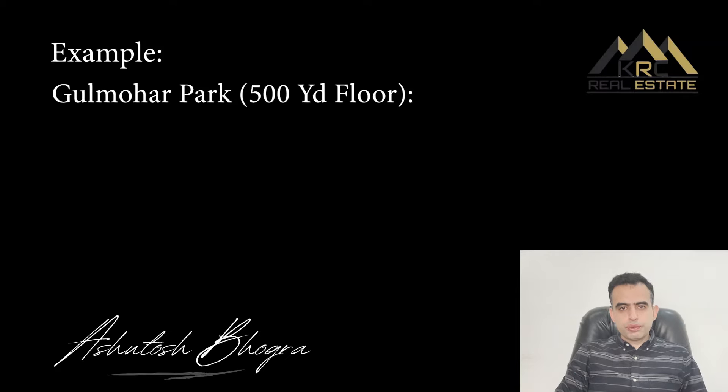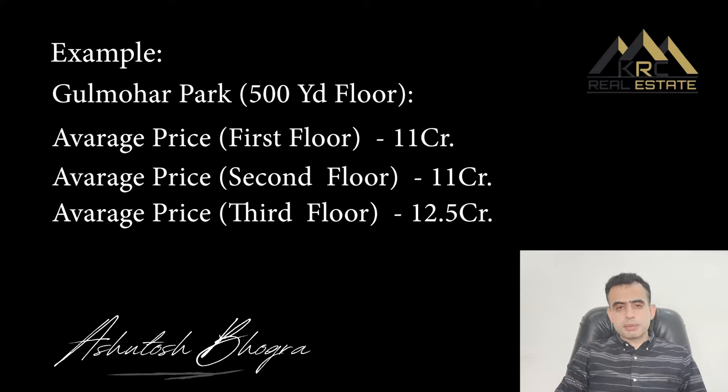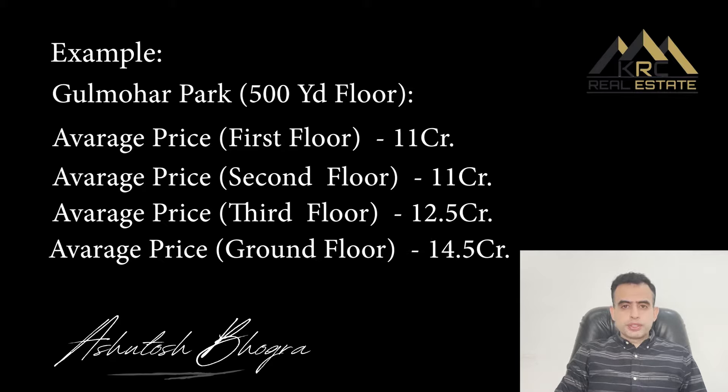So how does a builder evaluate a property? The first thing he looks at is whether the title is clear. There is a myth of 'location, location, location' — it's actually title, location, and construction for any buyer. Then he looks at how much one floor in that particular location would sell for. For example, in a good area like Moor Park with a 500-yard plot, one floor might sell at an average of 11 crores for first or second floor, 12 to 12.5 for the third.